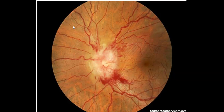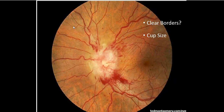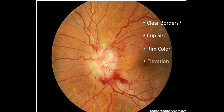Here's an example, and I hope the initial reaction is that this is clearly abnormal. Rather than just saying it's abnormal, we have to think about how we assess the various features we spoke about. Are there clear borders between the optic nerve and the retina? Certainly not. The cup size — do we see a cup here? There might be something in the middle, but I would say there's no discernible cup. What's the rim color? Is it pinkish, orangish? Certainly not — it's more of a whitish color, suggesting the tissue is sick.